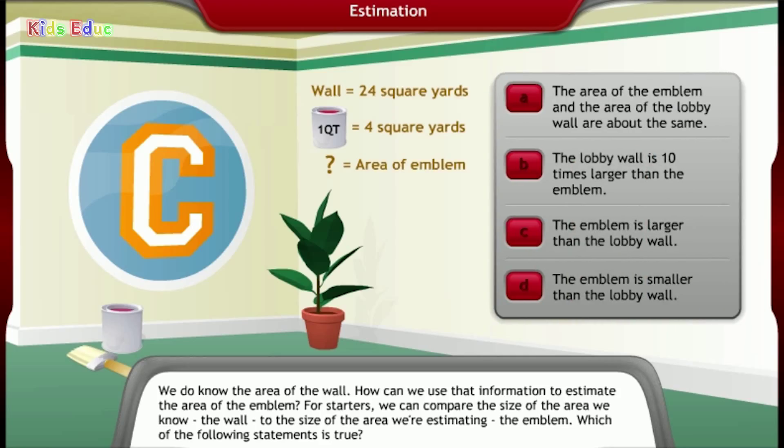Which of the following statements is true? A. The area of the emblem and the area of the lobby wall are about the same. B. The lobby wall is 10 times larger than the emblem. C. The emblem is larger than the lobby wall. D. The emblem is smaller than the lobby wall. D. The emblem is smaller than the lobby wall.